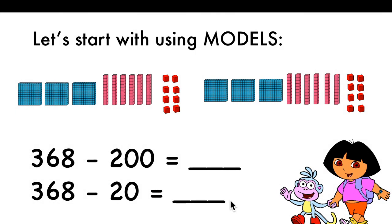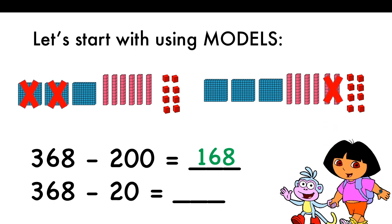When you're taking away, you can also use the models. When you have the number 368 and you have to take away 200, you cross out 200 blocks. How many hundreds will you have left? Only 100. Tens and ones will stay the same. When you're taking away tens, you will take from the tens blocks. Hundreds will stay the same. Tens digit will change.